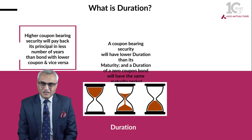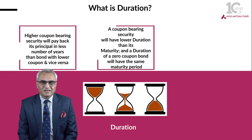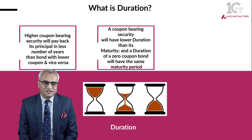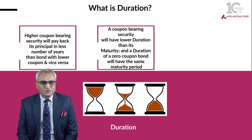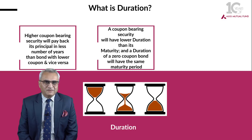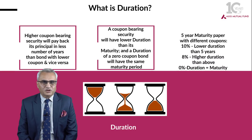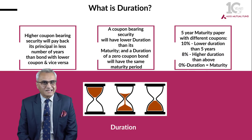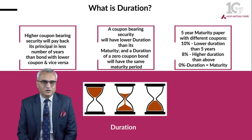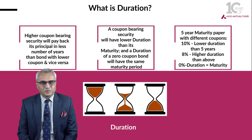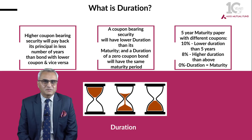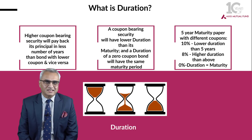The duration of a zero-coupon bond with the same analogy will be equal to its maturity. To conclude on duration: for a 5-year maturity paper with different coupons, a 10% coupon will have a lower duration than an 8% coupon, and a 0% coupon bond of 5-year maturity will have a duration equal to its maturity, which is 5 years.